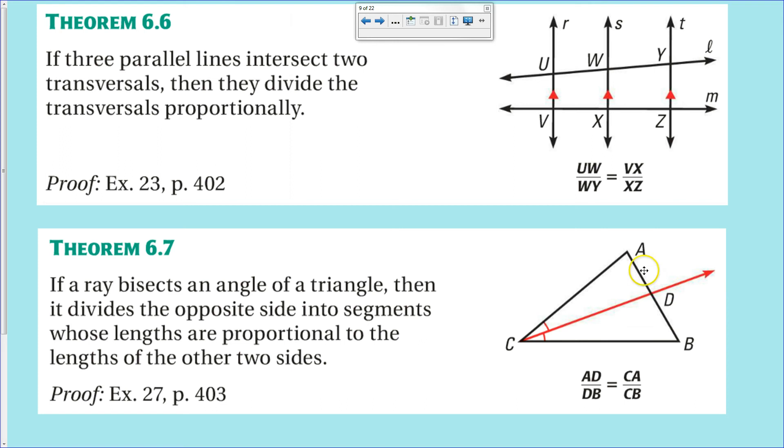That intersection turns the opposing side into two different segments. And what this theorem says is that those two segments that just got split up into, if I took this segment length divided by this segment length, that that should share the same ratio as the adjacent sides to the bisected angle. So AC to BC. So in other words, AD divided by DB should be the same ratio as AC divided by BC. And I can see down here that it's stated backwards from what I just said, but you get the idea.